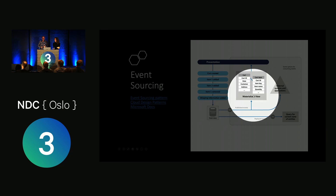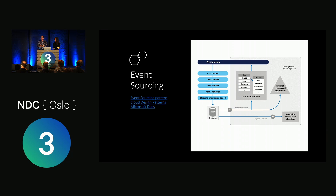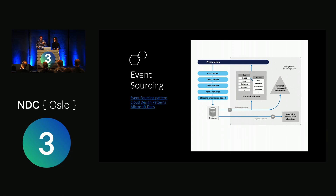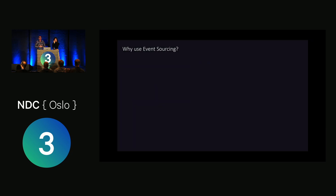We'll also show how to create materialized views on top of those events. Systems and applications can read those events directly by replaying them to get the final state of an entity — for example, a shopping cart with one item and some shipping info. Anyone can come to our event store, get all the events, play them back, and get the current state. So event sourcing is about storing events, not the entity itself, and replaying them to get the current state.